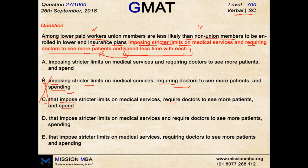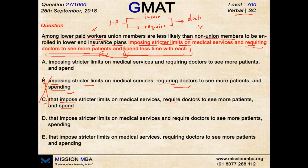Is it the insurance plans that are spending less time with the patients? Of course not — that destroys the meaning. Spending less time with each is the work done by the doctors, and it is a result of requiring doctors to see more patients. So 'imposing' and 'requiring' have to be kept parallel, whereas 'spending' should not be parallel to these — it should represent the result of the first two. The structure is: insurance plans do two things — impose stricter limits, require doctors to see more patients — and together these result in doctors spending less time.